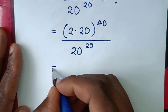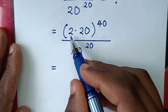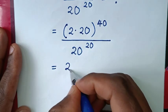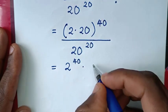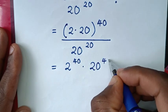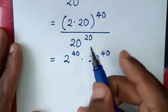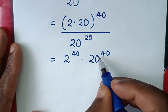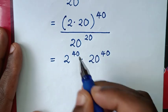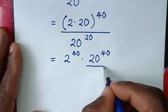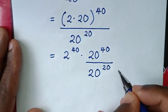We take the power of 40 inside the bracket: this gives 2 power of 40 times 20 power of 40. We then divide by 20 power of 20, applying that denominator to the part with base 20 — so we place 20 power of 20 under 20 power of 40.